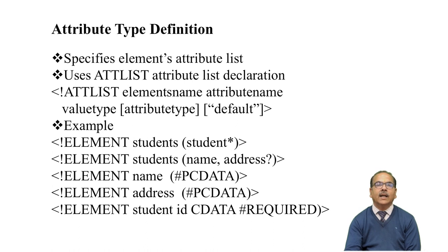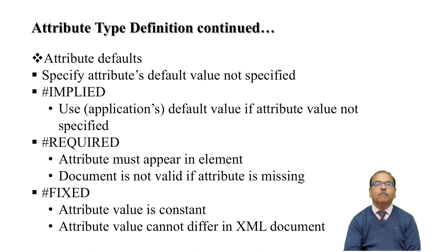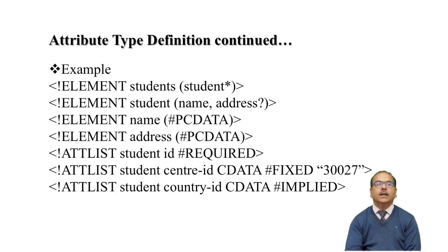There is a restriction with the hash sign — it will take a default value if not specified. Required means it must appear in the element. Fixed contains some default value. For example, character country ID CDATA implied means it will automatically take the default value.